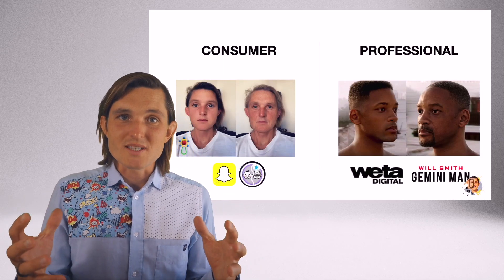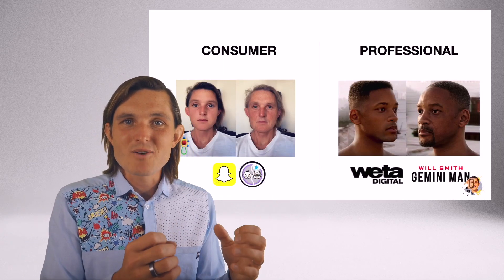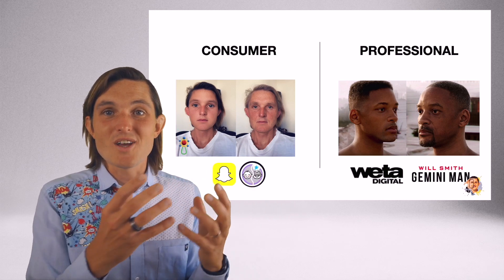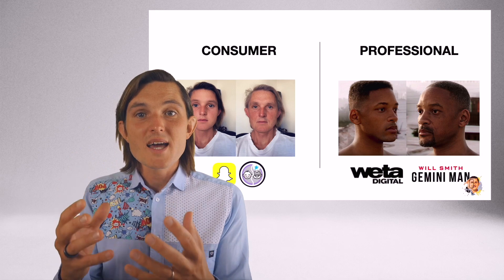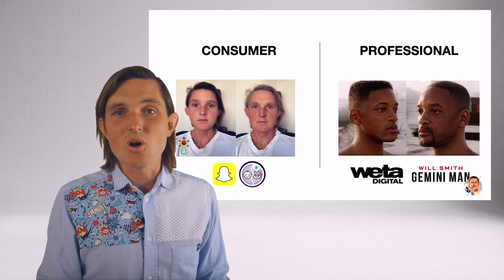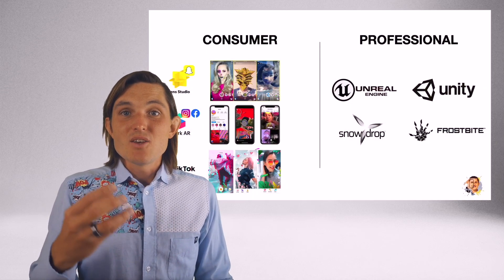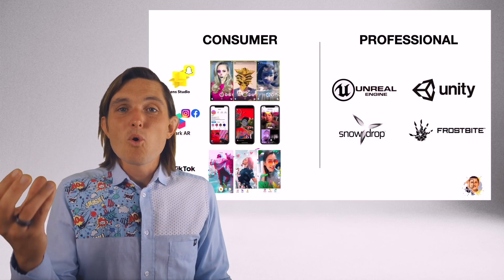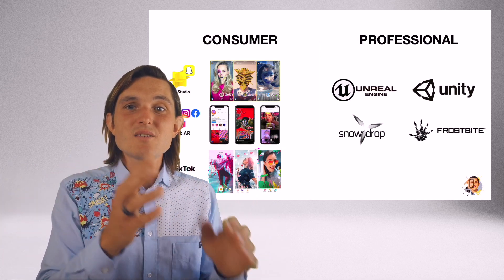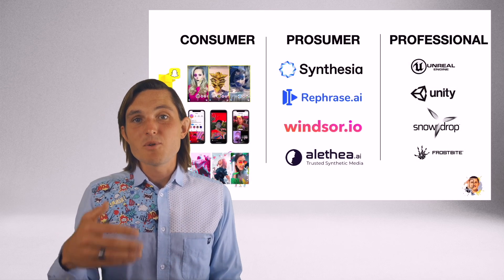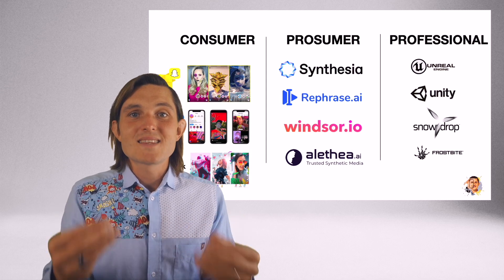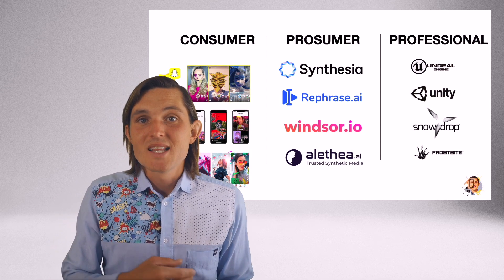So there's these two categories: on the consumer side we play around with filters — you can use the time machine filter on Snapchat to turn yourself older or younger. Or there are big high-end movie productions where professionally made work takes hours, months, and millions of dollars. But now those tools are getting more and more accessible. We see consumer ease of use coming to professional tools, and professional tools becoming more available to consumers, with a middle consumer class coming up from companies like Synthesia, Rephrase, or Windsor.